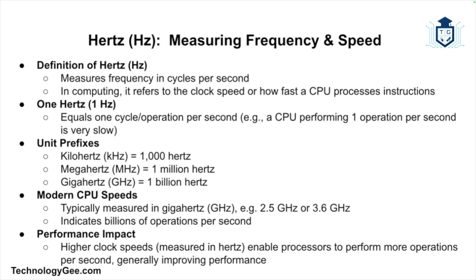The next unit to cover is the hertz. Hertz is used to measure frequency, which in computing often relates to clock speed or the speed of a processor. One hertz equals one cycle per second — a CPU running at one hertz performs one operation per second, which is extremely slow. Kilohertz is 1000 hertz, megahertz is 1 million hertz, and gigahertz is 1 billion hertz. Modern processors are typically measured in gigahertz, such as 2.5 GHz or 3.6 GHz, indicating they can perform billions of operations per second. The faster the clock speed measured in hertz, the more operations a processor can perform per second, which generally leads to faster performance.